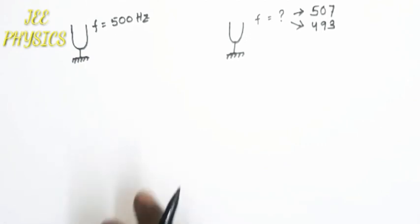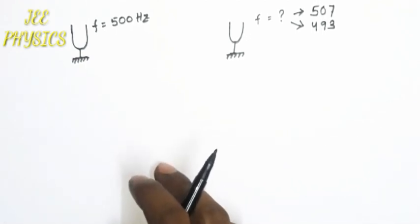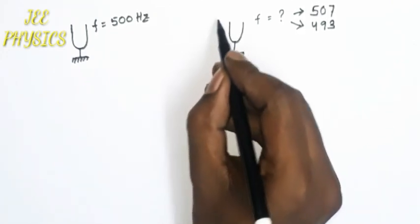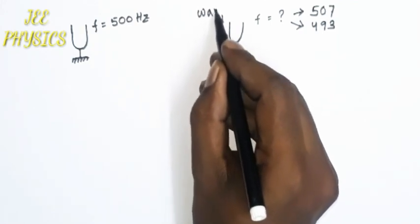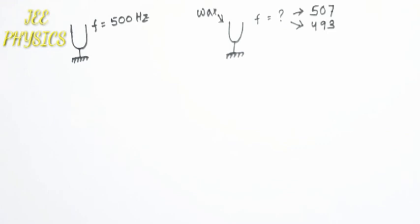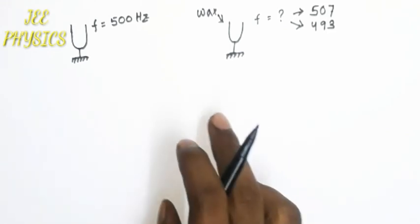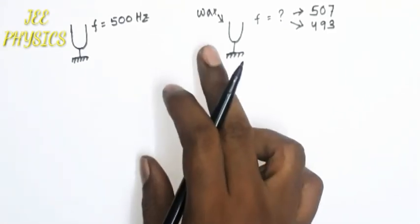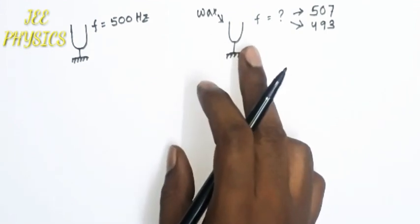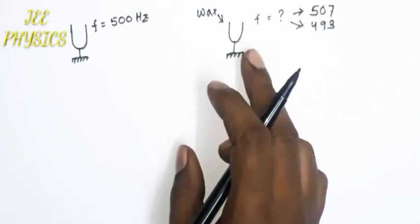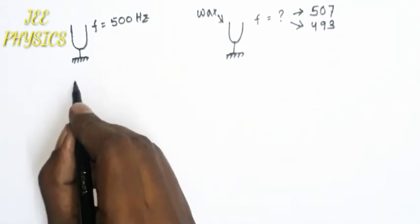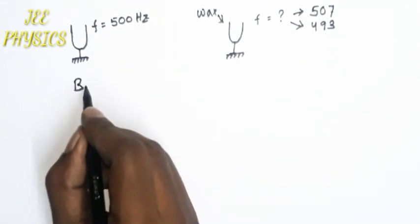This is a tricky question. Let's say the unknown is waxed first — so we are waxing the unknown tuning fork. When we wax the unknown tuning fork, its frequency will decrease, becoming less than in the previous case.